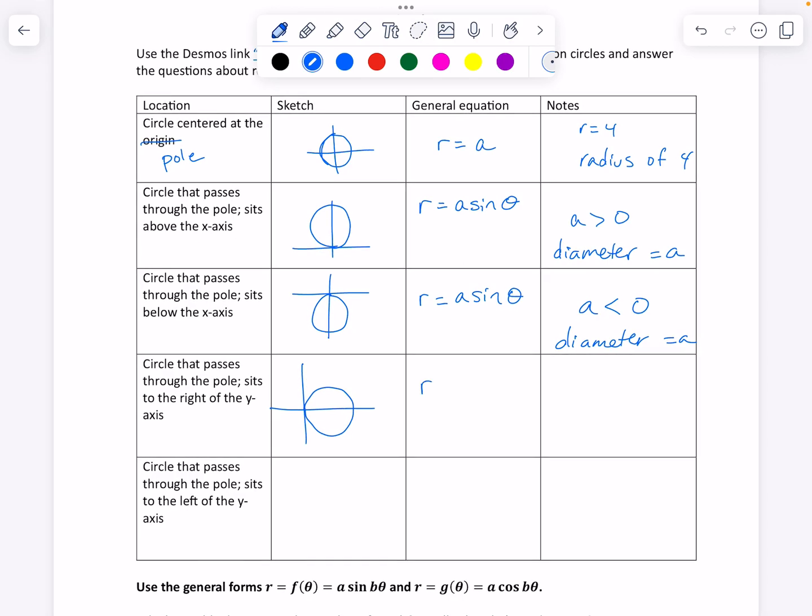Okay, so this is... Let's see, anything else I need to write here? Okay, this is where it sits above when a is greater than 0. And a, the diameter of that circle, is equal to the a value. Okay, circle that passes through the pole sits below the x-axis. That's what we just saw a second ago.